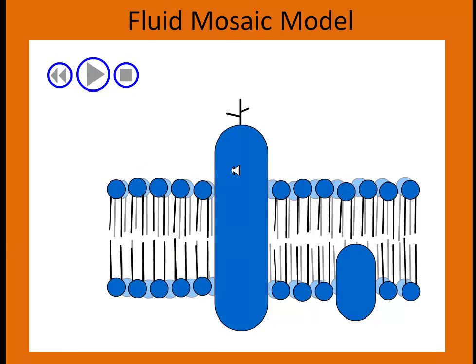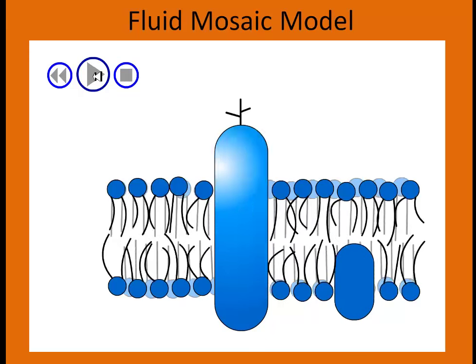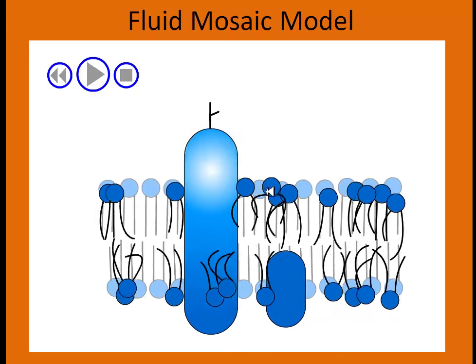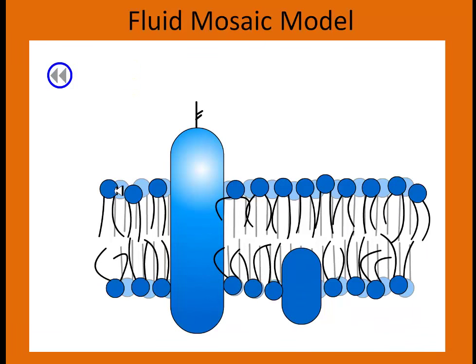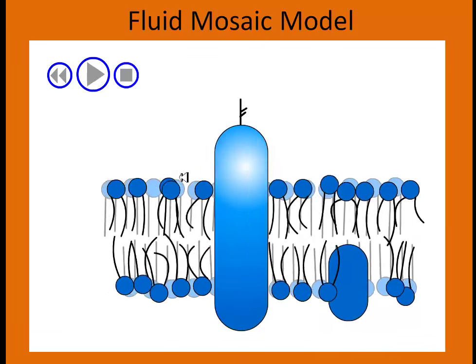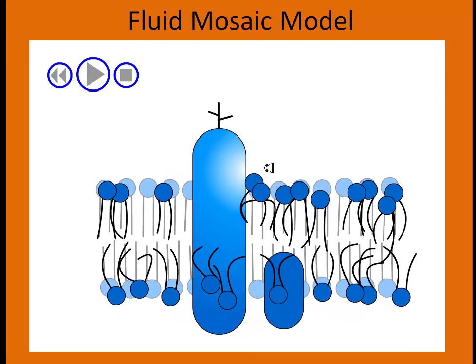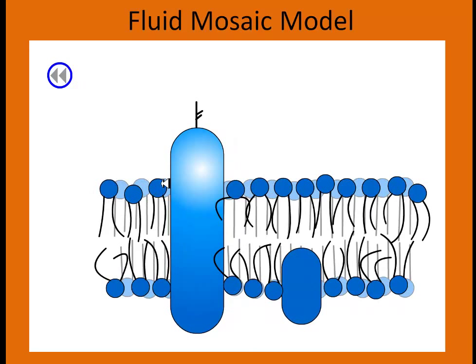This is an animation of what's called the fluid mosaic model. Fluid mosaic model means that the membrane is fluid — it moves and changes shape. Because it has an aqueous solution on both the outside and inside, it actually moves. You can see the proteins and phospholipids don't have to stay fixed in place; they can be pretty much anywhere in there.